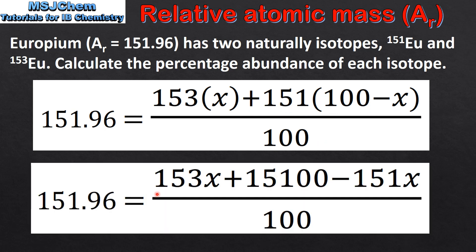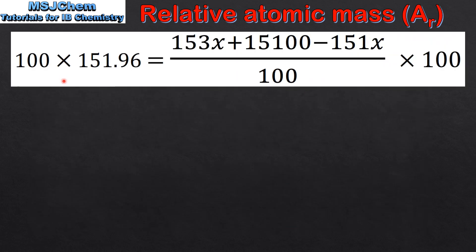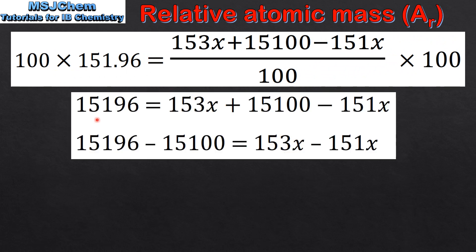Next we expand the brackets to give us 153x plus 15100 minus 151x. In the next step we multiply both sides of the equation by 100. This gives us 15196 equals 153x plus 15100 minus 151x.